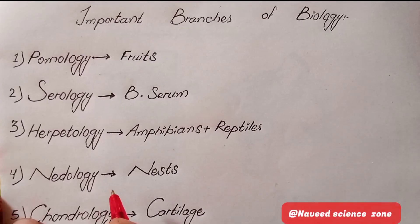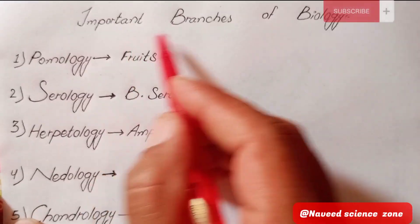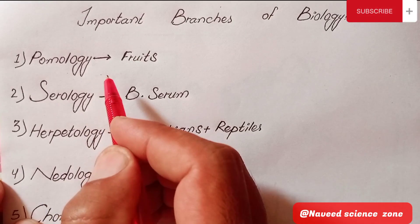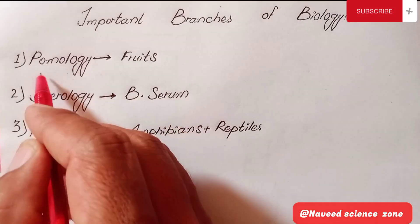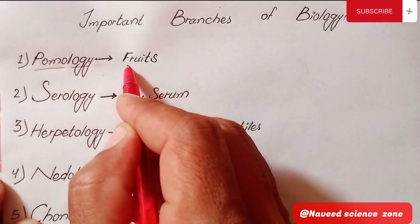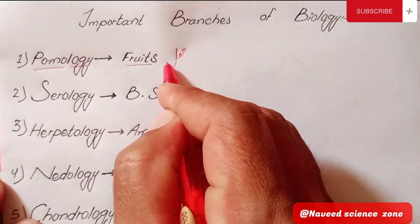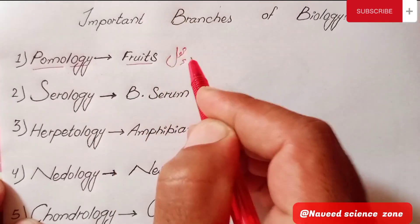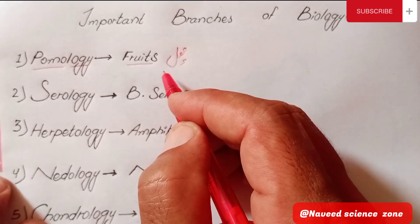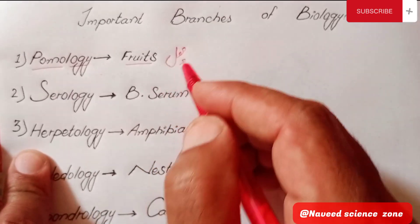Dear students, the main topic is the important branches of biology. The first branch is Pomology. The branch of biology in which we study about fruits is called Pomology.